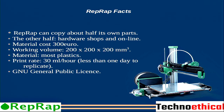Here are some facts about RepRap machines: a RepRap can copy about half of its own parts, and the other half you can buy in shops online. A RepRap should cost around 300 euro. A normal build volume is 20×20×20 cm cubic. They have a new general public license, and a print rate is about 30 mm per hour — so pretty much one day to replicate it with 50% of the parts.